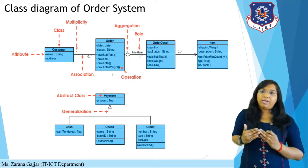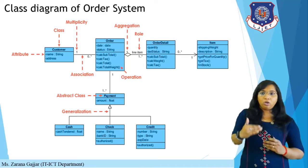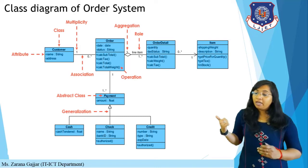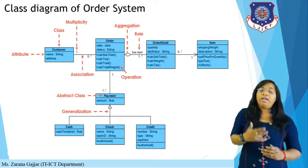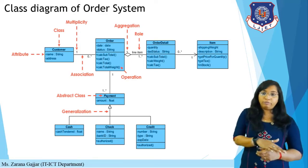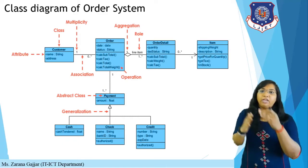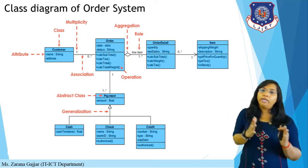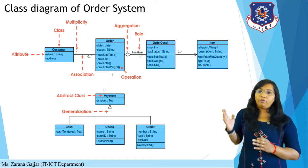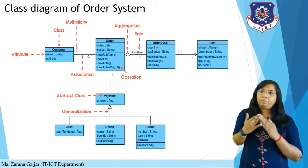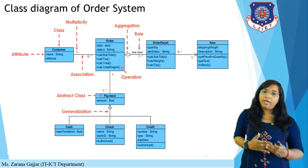The payment class — one order, one payment — is defined as an abstract class, written in italic format. A person can pay by cash, check, or credit or online transfer. Payment is generalized into cash, check, and credit subclasses. This is the complete diagram of the food ordering system with eight classes: customer, order, order detail, item, payment, cash, check, and credit.